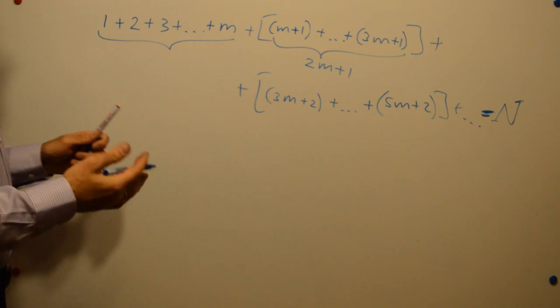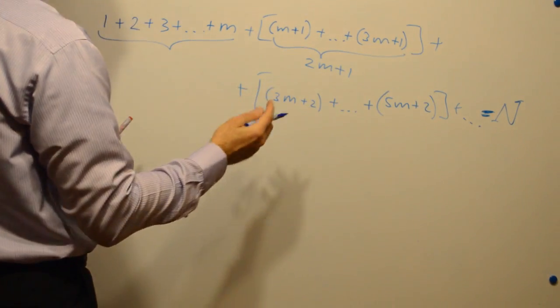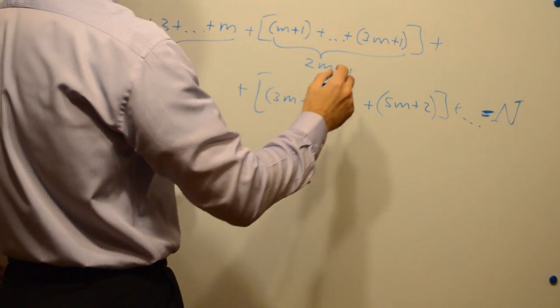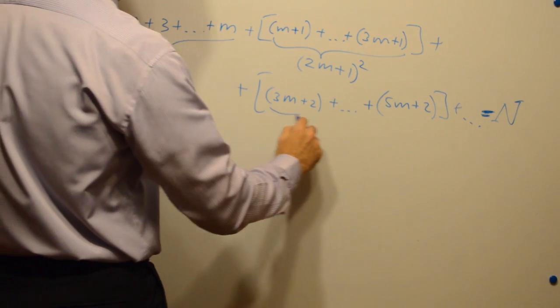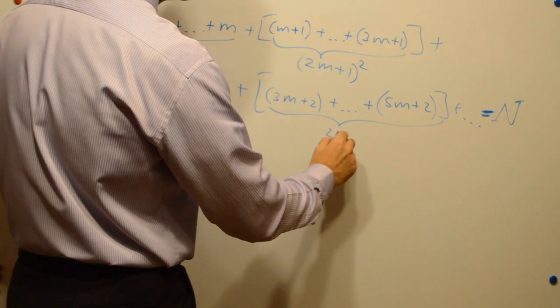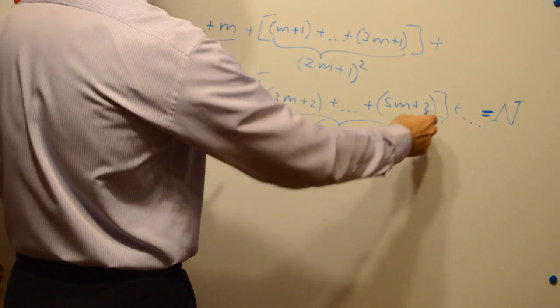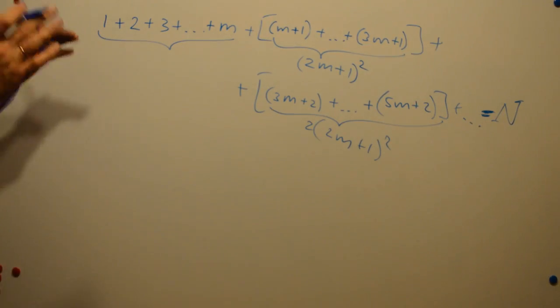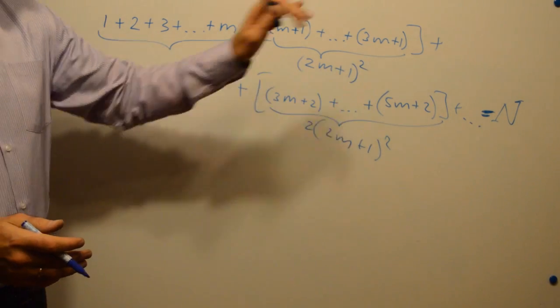It's interesting that we can show that this group, sum of this group equals 2m plus 1 squared. Sum of this group equals 2 times 2m plus 1 squared. And all other sums in brackets are multiples of 2m plus 1 squared.